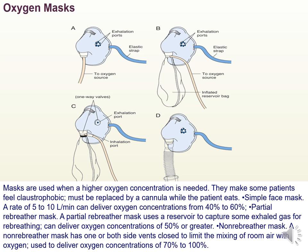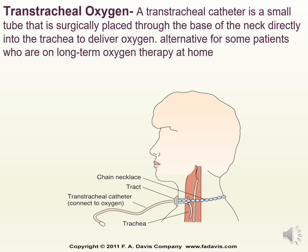A Venturi mask delivers an accurate concentration of oxygen up to 100% and is often used with patients who have COPD or emphysema. In these patients, we can't simply increase the flow rate because of the risk of shutting off the respiratory drive. Giving a higher concentration of oxygen via Venturi mask is usually more effective. Transtracheal oxygen can also be administered via a small tube surgically placed at the base of the neck directly into the trachea, and can deliver oxygen for patients on long-term home therapy.